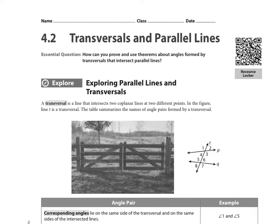Welcome to video 4-2. We're going to be talking about transversals and parallel lines. A transversal is a line that intersects two coplanar lines at two different points. When a line intersects, we create vertical angles. In this section, we're going to be creating two sets of vertical angles: angles one, three, two, four, and then five, seven, six, eight.